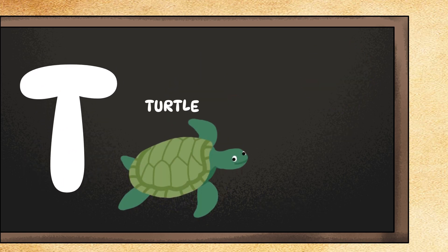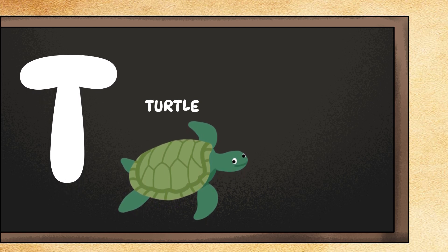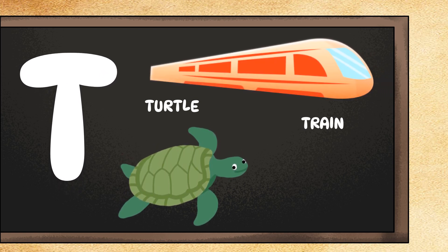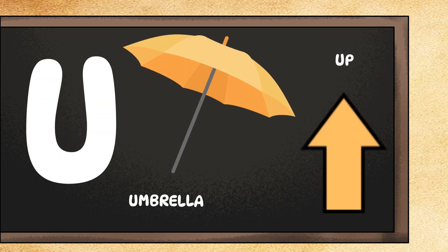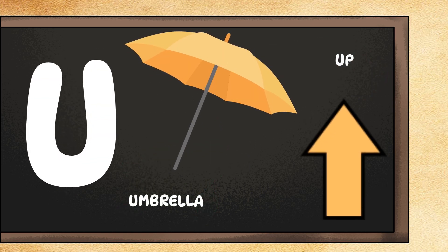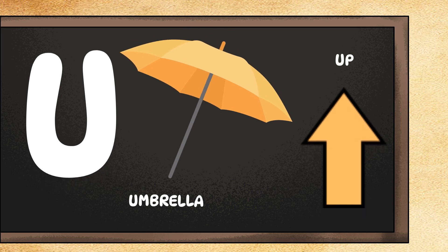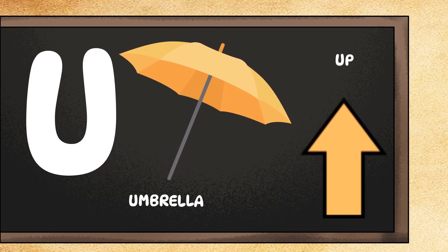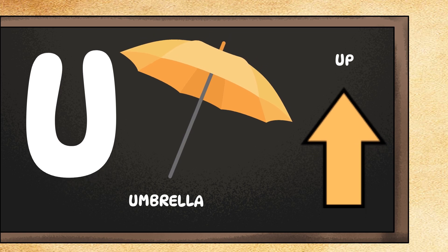T is for turtle. Can you move in slow motion like a turtle? Great! T is also for train. Can you chug like a speedy train? Choo-choo! U is for umbrella. Can you open and close an imaginary umbrella? Well done! U is also for up. Can you reach up high? Stretch!